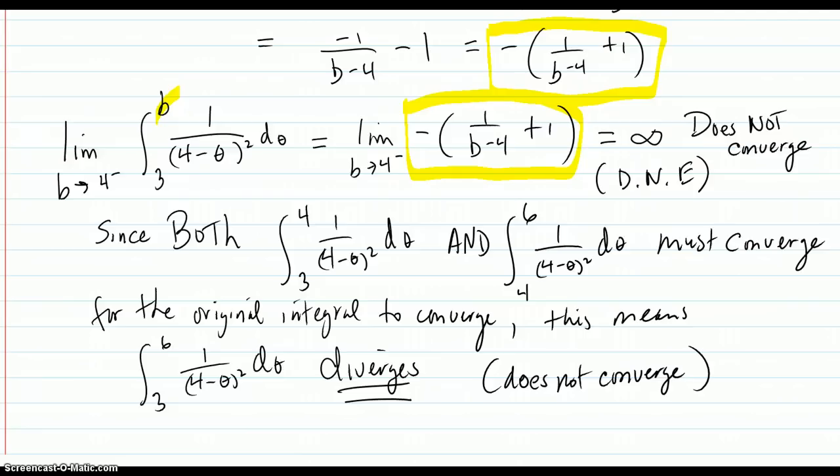And here's where you have to do a little bit of thinking. b is going to 4 from the left. That means you're inching up. You're at numbers like 3.99 minus 4. So that's a negative number right here. This is negative. So a negative times a negative is going to be a positive, and then you get this minus 1.